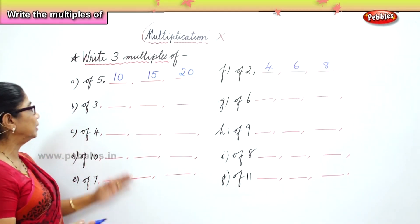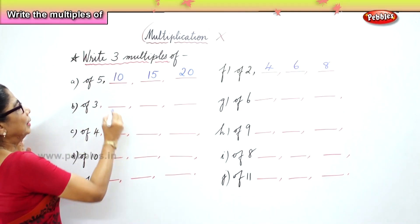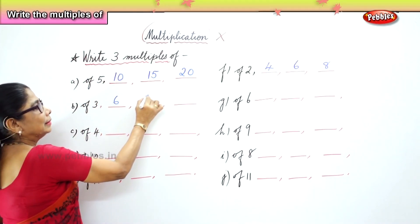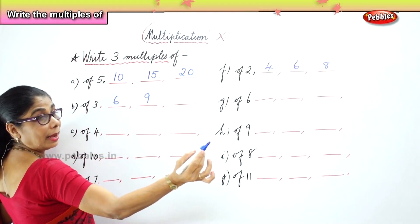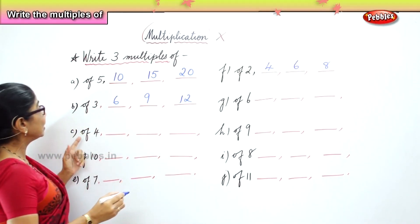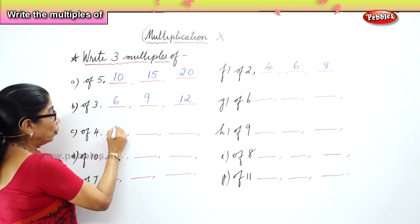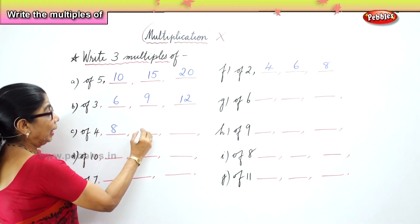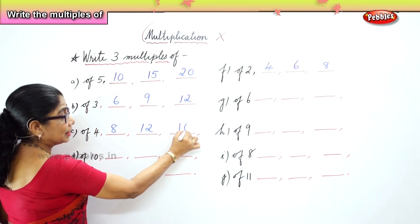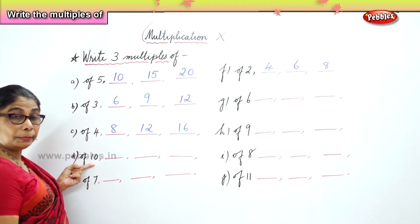Write three multiples of five: five, ten, fifteen, twenty. Next, write three multiples of three: three, six, nine, twelve. Very good! Next, write three multiples of four: four, eight, twelve, sixteen. Write three multiples of ten.